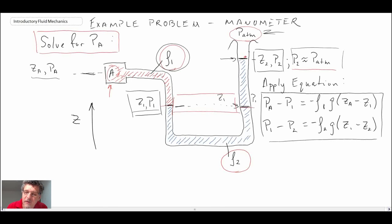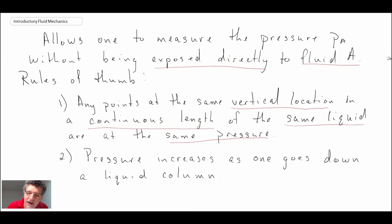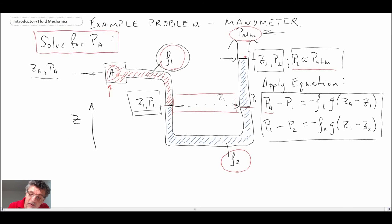We have a continuous liquid going between those two locations, and consequently that was how we were able to do that. The other one is that pressure increases as one goes down a liquid column. So be careful with the way that you have the order. Remember A corresponds to A there and one to one.